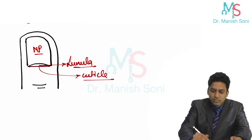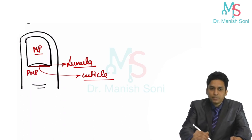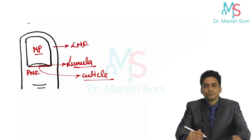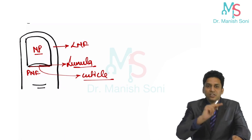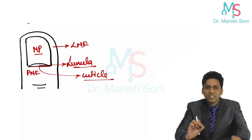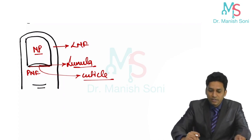Behind the cuticle is the proximal nail fold. The folds which are present on either side of the nail plate are the lateral nail folds. So to recap: nail plate, hemicircular white area is Lunula, thin rim of skin attached to the nail plate is cuticle, behind which is proximal nail fold, and on either side of the nail plate are lateral nail folds.